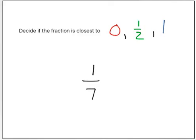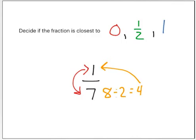What about the fraction 1 seventh? I look at the denominator. The denominator is 7, but 7 is almost 8. So 8 divided by 2 is 4, but 1 isn't really close to 4. Look how far apart these two numbers are — 1 isn't even close to 7. So which benchmark is this closest to? I think it's closest to 0.